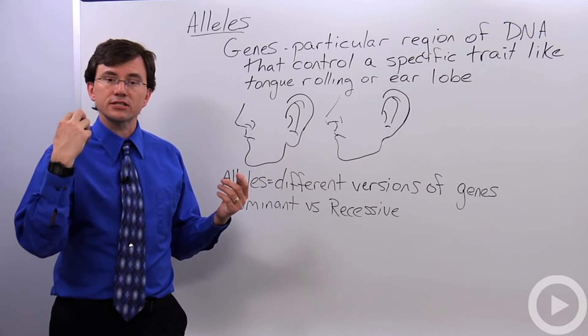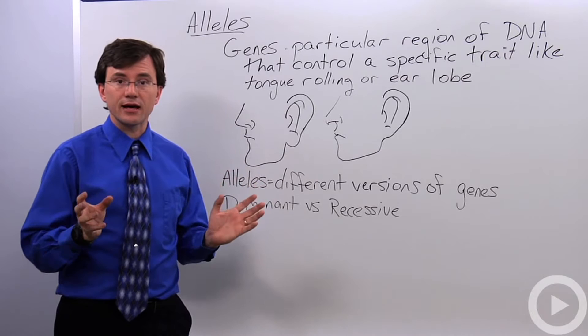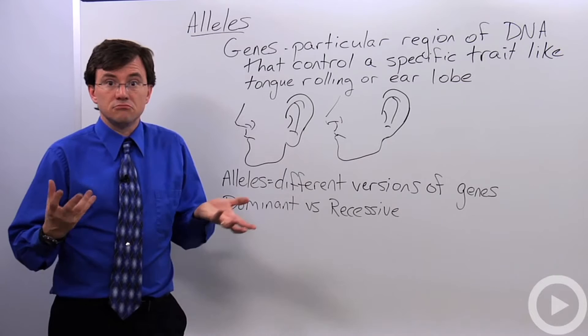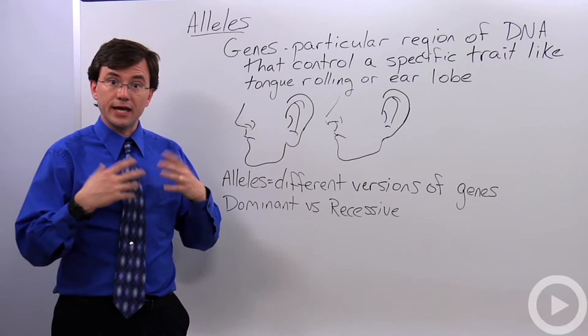Examples of genes are there's a gene on one of your chromosomes that controls whether or not some muscles are arrayed across your tongue at a particular time during fetal development. One version of that gives you the ability to roll your tongue. A different version of that gives you the inability to roll your tongue.